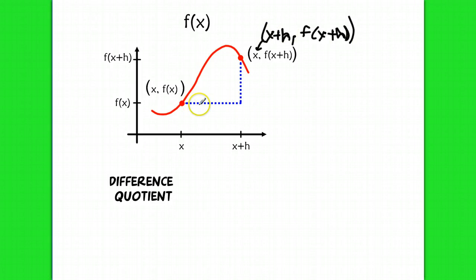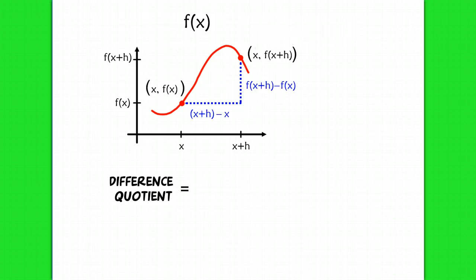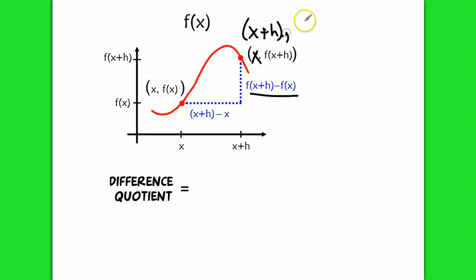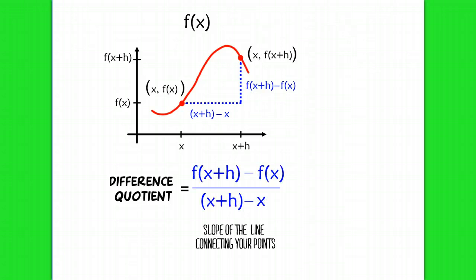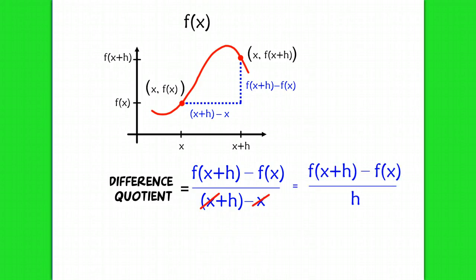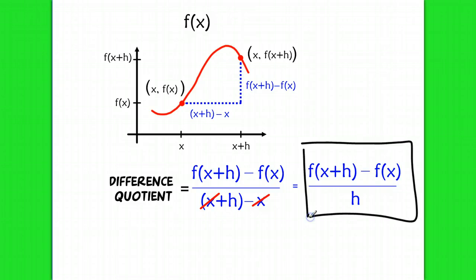So if we find the slope between those points, we end up with the difference quotient formula. You'll notice in the denominator that those x's cancel out, so the denominator simplifies to just h. Our difference quotient looks slightly different from the average rate of change formula because the x values cancel, but it's the same idea — you're still finding the slope between two points.